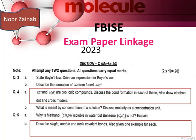For exam paper questions: KCl and MgF₂ are two ionic compounds — you have to discuss the bond formation in each and draw the electron dot and cross models. You also have to describe single, double, and triple bond formations in covalent bonds and state examples of each.